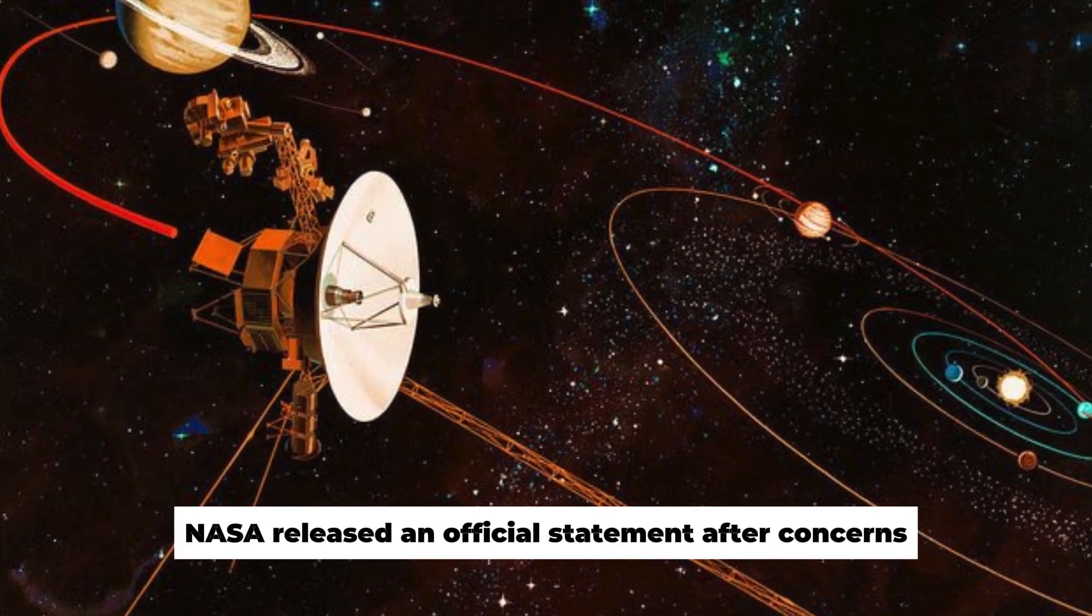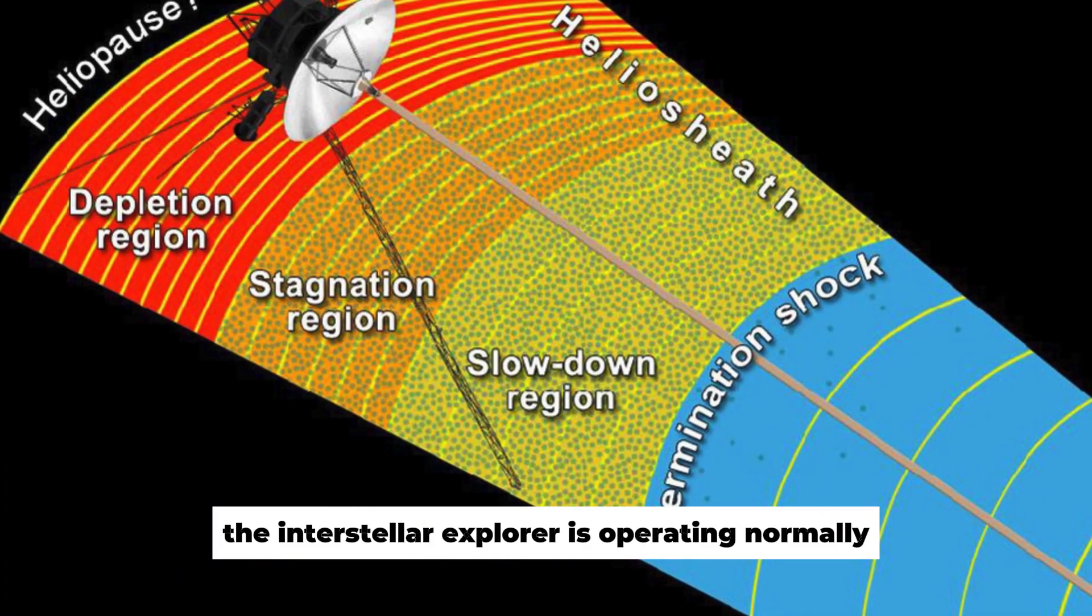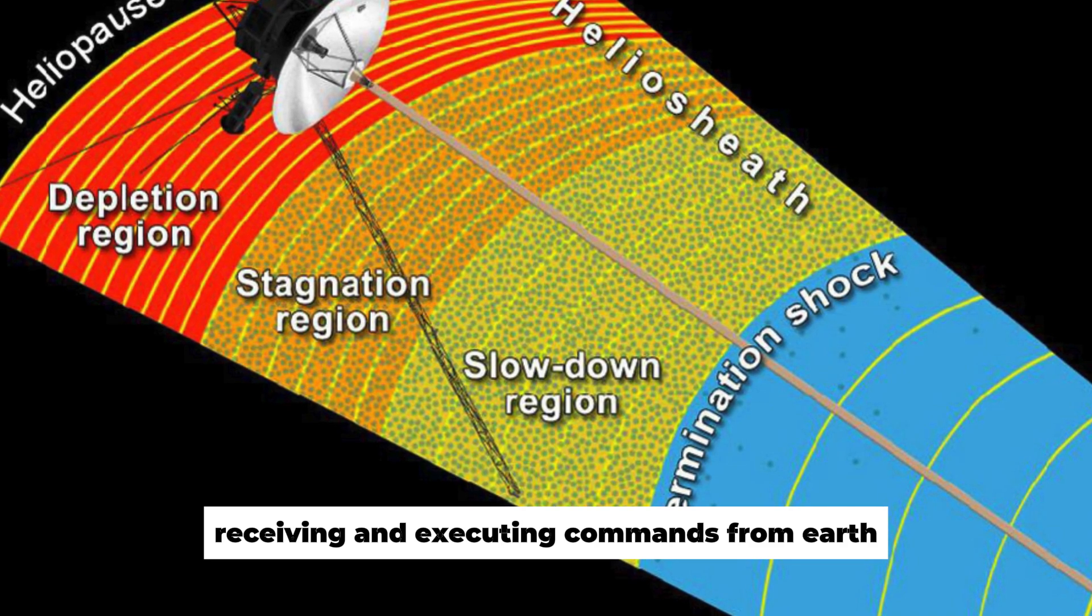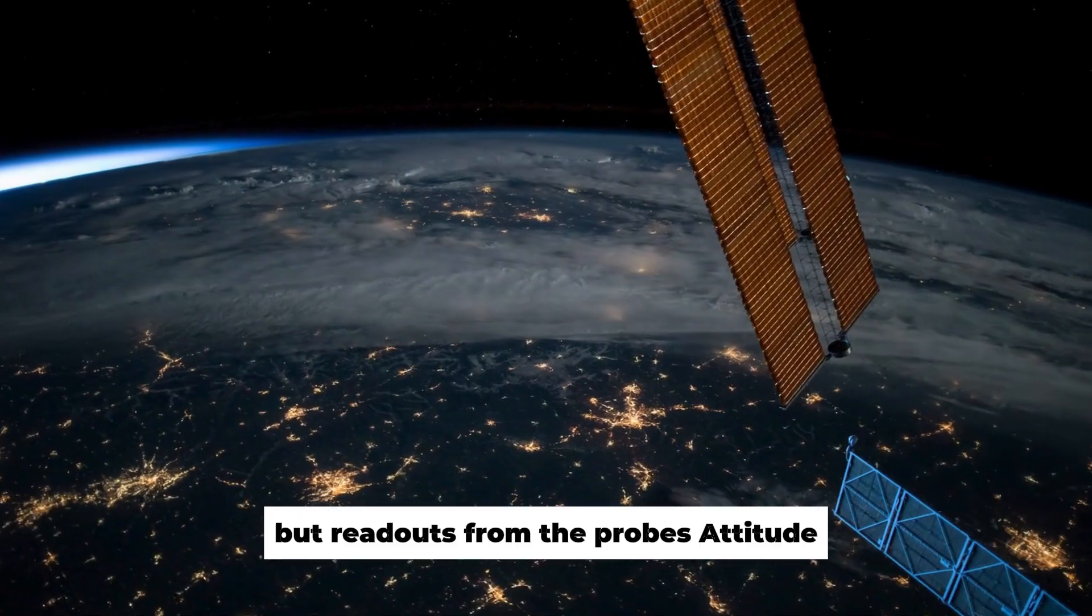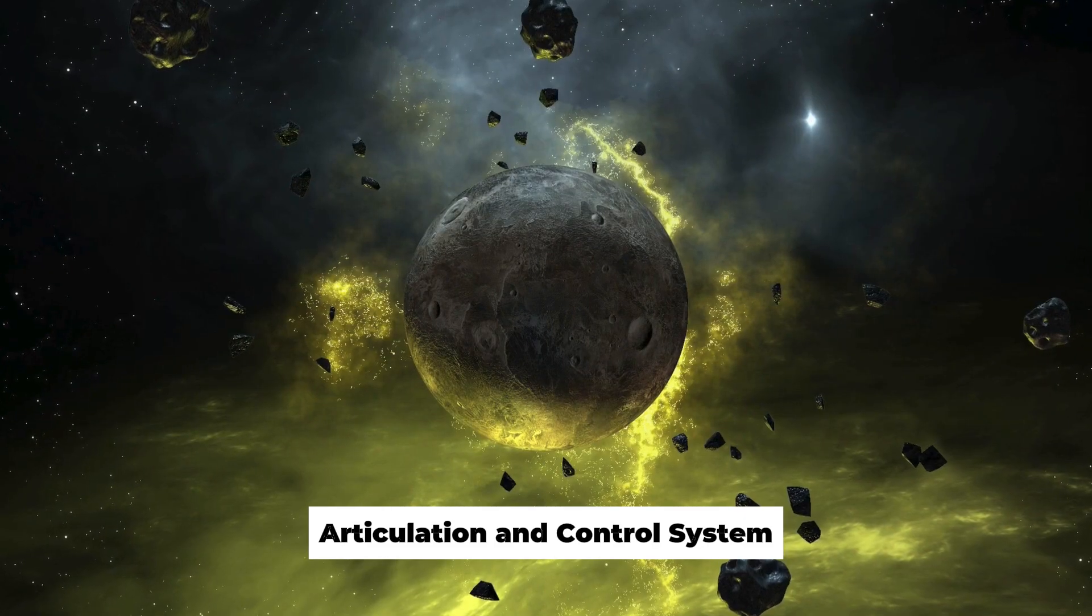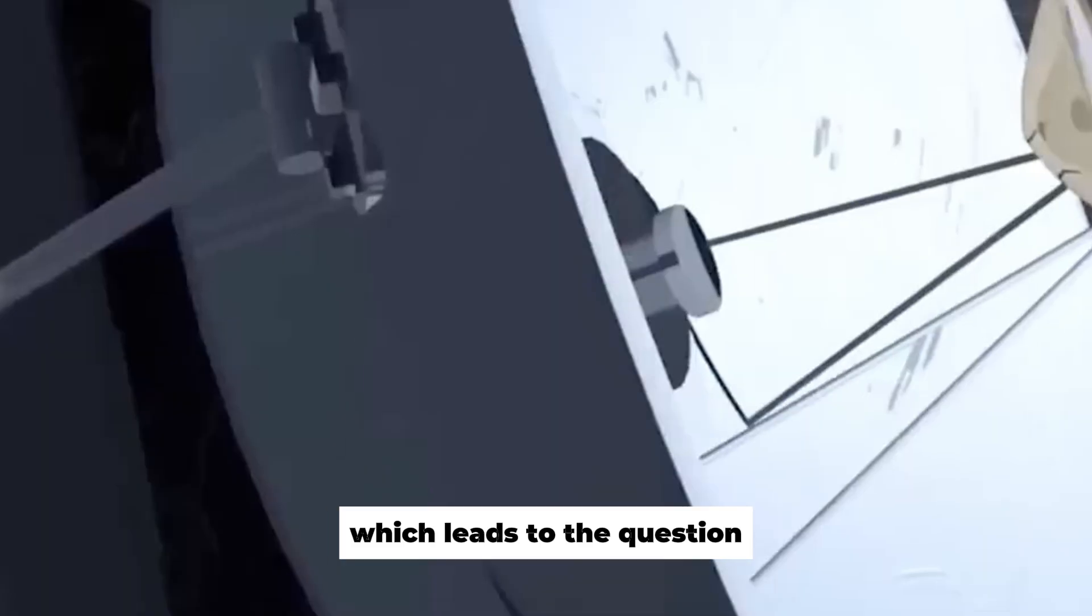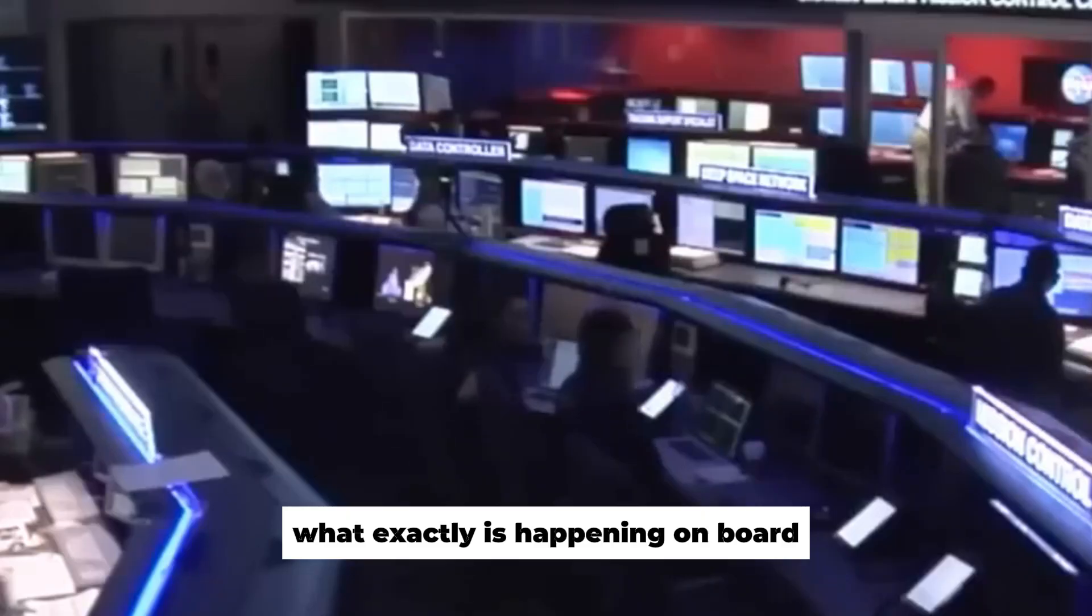NASA released an official statement after concerns emerged, saying the interstellar explorer is operating normally, receiving and executing commands from Earth, along with gathering and returning science data. But readouts from the probe's Attitude Articulation and Control System, AACS, don't really reflect what's happening on board, which leads to the question, what exactly is happening on board?